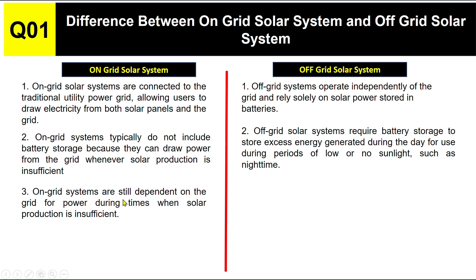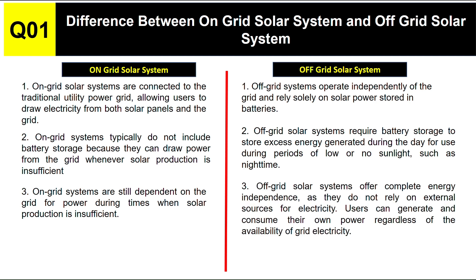On-grid solar systems are still dependent on the grid for power during times when solar production is insufficient — the on-grid system depends on the utility grid. Off-grid solar systems offer complete energy independence, as they do not rely on any external source for electricity; users can generate and consume their own power regardless of grid availability.